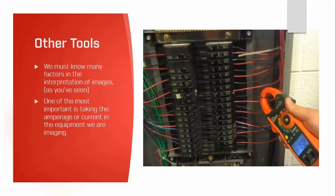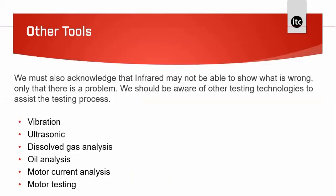There are other tools in the toolbox. One of the most important is taking the current reading of the equipment you're imaging. Also be aware that infrared may not be able to show what is wrong — only that there is a problem. Other testing technologies to assist include: vibration analysis for motors, ultrasonic for air leaks or arcing, oil analysis for transformer oil, and motor current analysis. Thermography is excellent at finding a problem, but we may need other tools to understand exactly what that problem is.